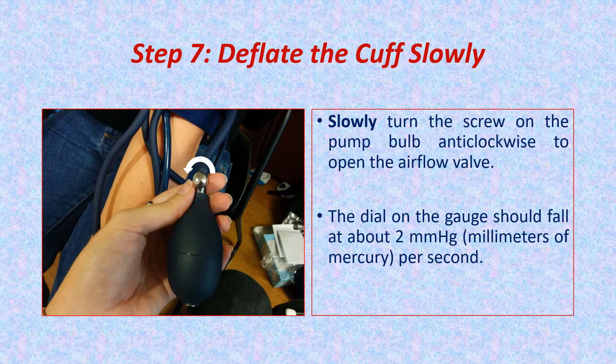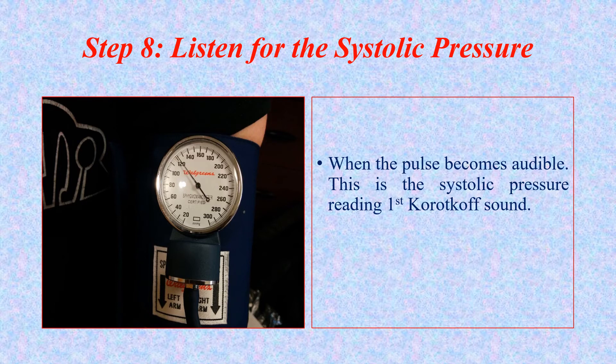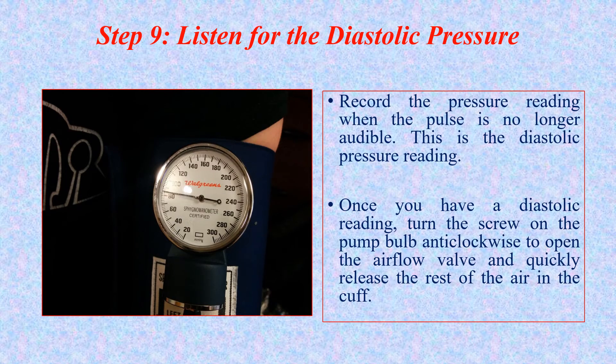Continue deflating until you hear the first sound. When the pulse becomes audible, this is the first Korotkoff sound and this is the systolic blood pressure reading. Then continue gradual deflation until no pulsation is heard — the sounds begin to disappear completely. This is the fifth Korotkoff sound and represents the diastolic blood pressure reading. Once you have the diastolic reading, turn the screw anti-clockwise to open the airflow valve and quickly release the rest of the air in the cuff.